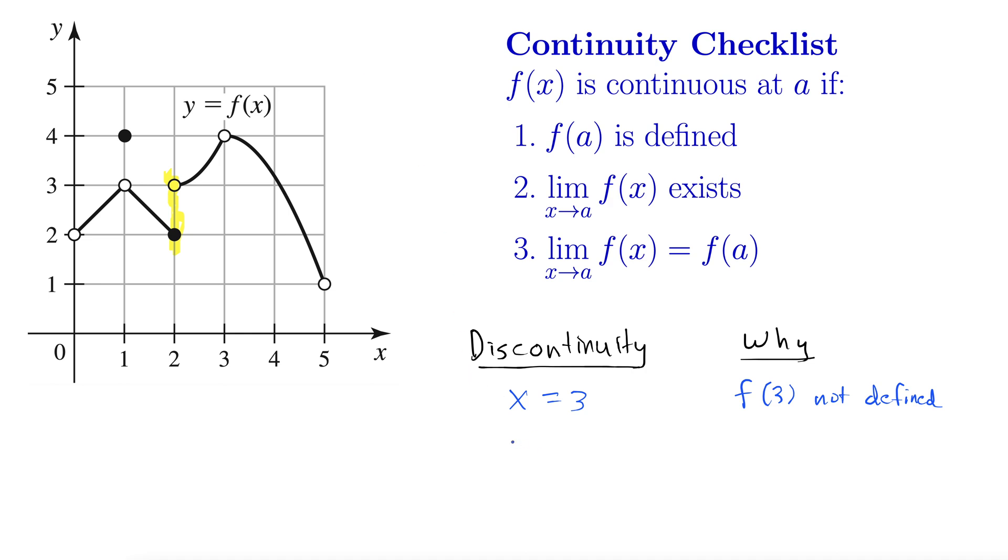Okay, so yep, that's discontinuous. I couldn't draw that without picking up my pencil. So this is at x equals 2. And on the continuity checklist, this one is number 2. For a function to be continuous, it requires that the limit exists.